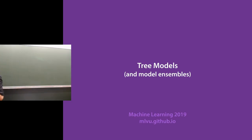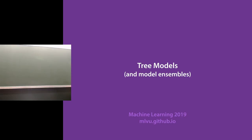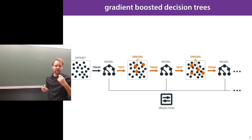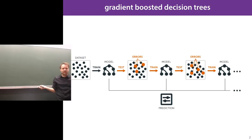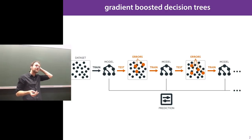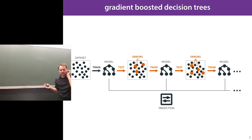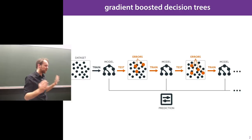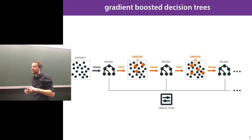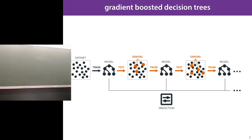Today we're going to talk about tree models and model ensembles. This combination is inspired by gradient-boosted decision trees, which is a particular approach to machine learning. If you were to ask a data science specialist or machine learning researcher which model gives the best performance out of the box, they will either tell you about the no-free-lunch principle, or they will say gradient-boosted decision trees will work best.